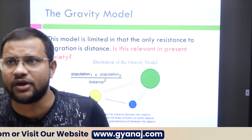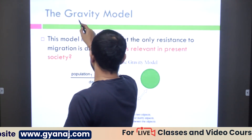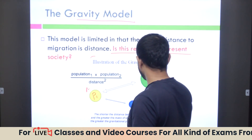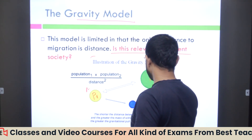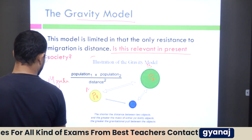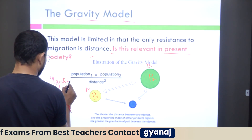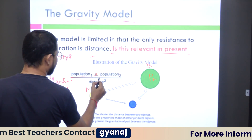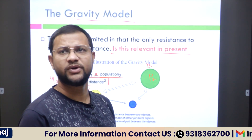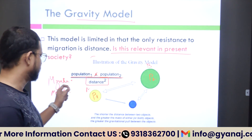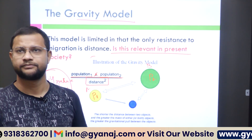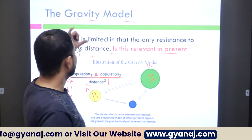So you need to apply this concept of gravitational force to the migrational model. The formula is: Population 1 multiplied by Population 2, divided by the square of the distance between them. This gives the migrational intensity or magnitude between any two different locations.